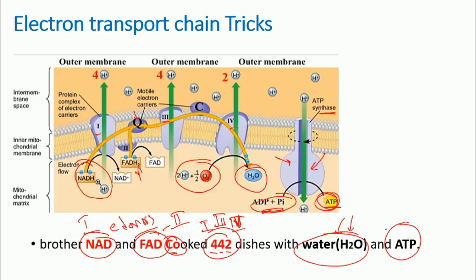While the rotor unit of this ATP synthase starts rotating, which is combining ADP with Pi to make ATP, which is energy, which is another product at the end. So brother NAD and FAD cooked 442 dishes with water and ATP. That's why I told you to remember good delicious dish, food dish.